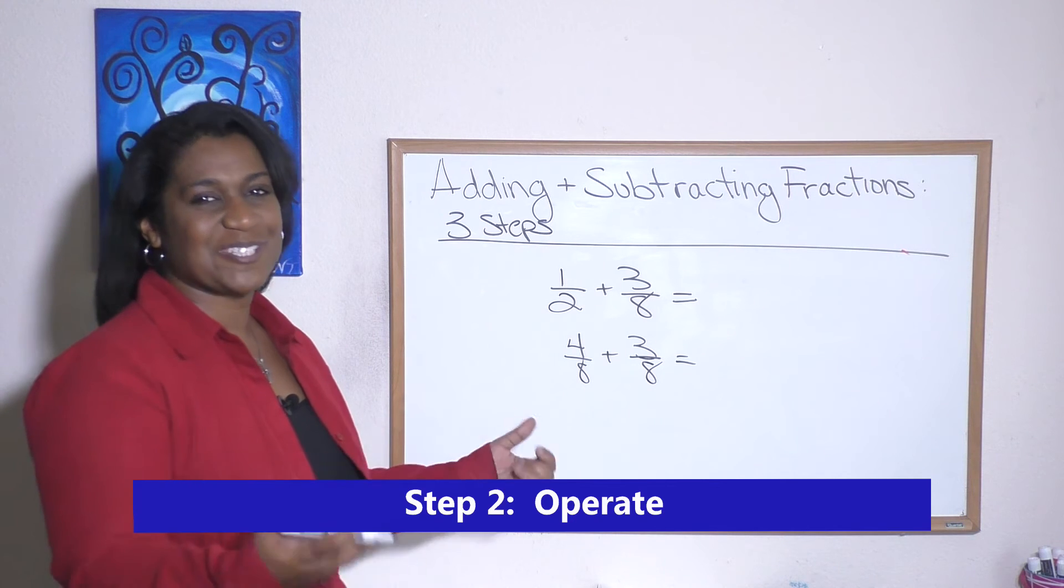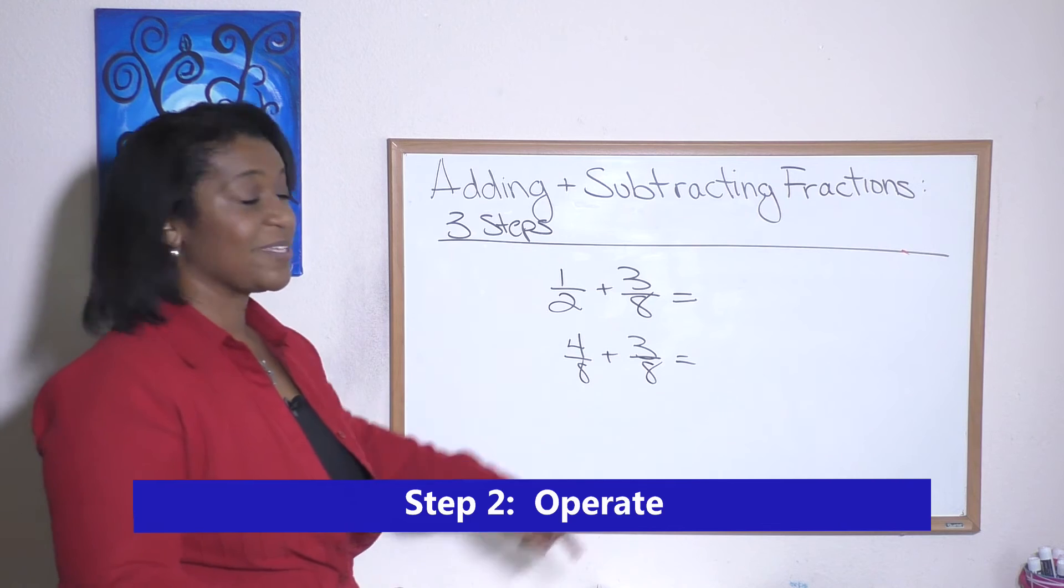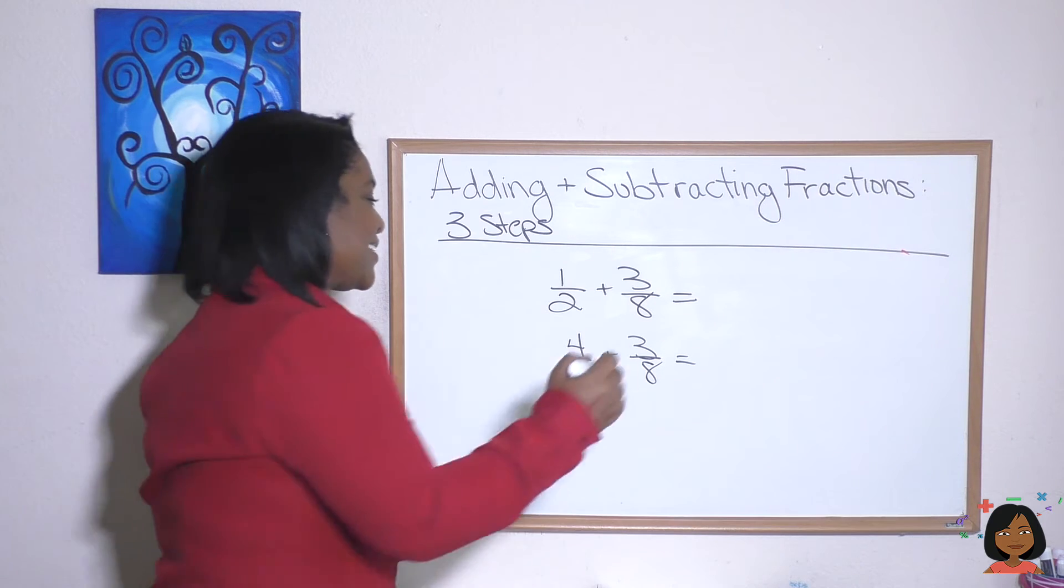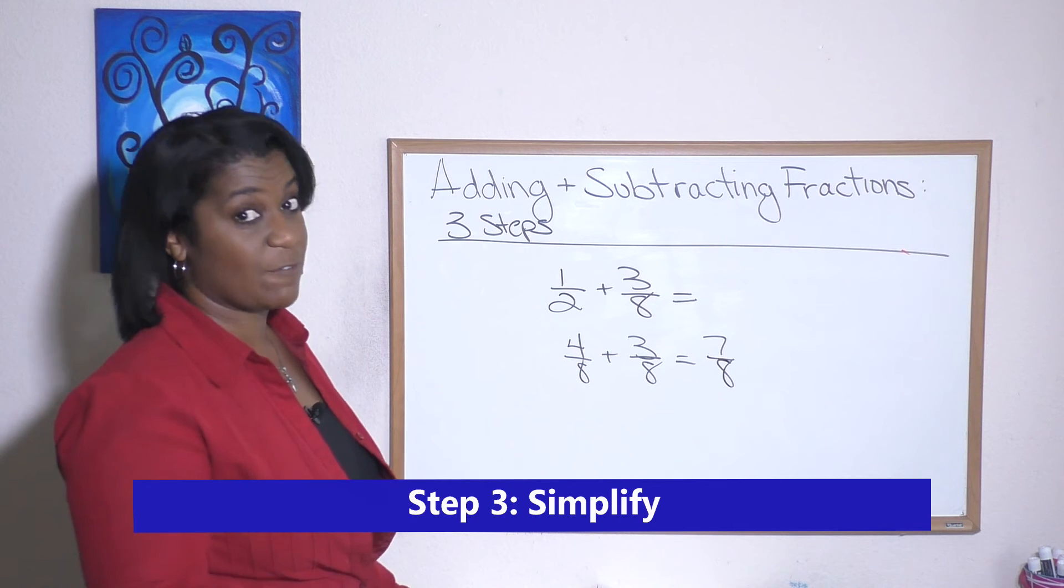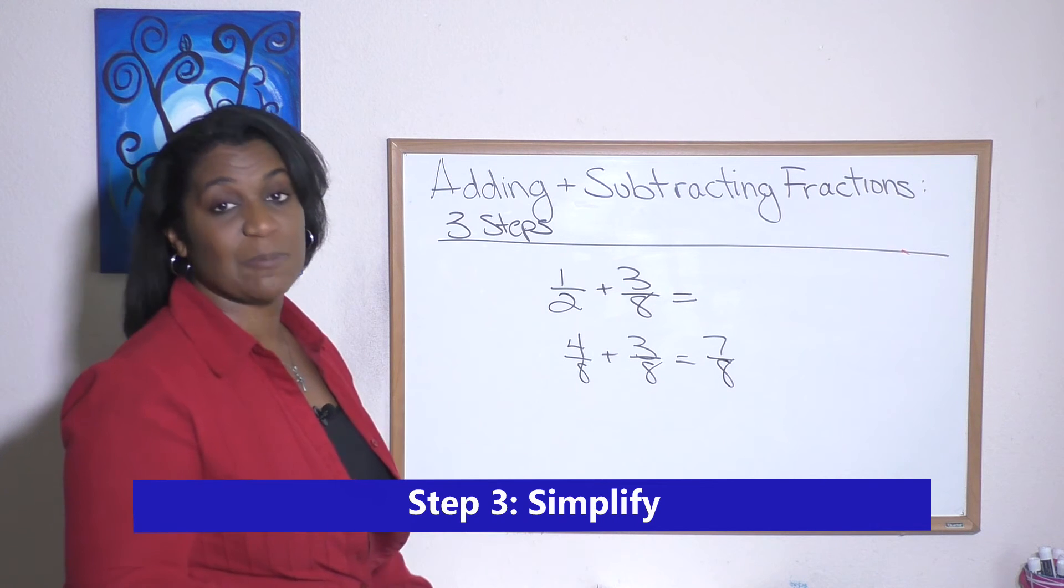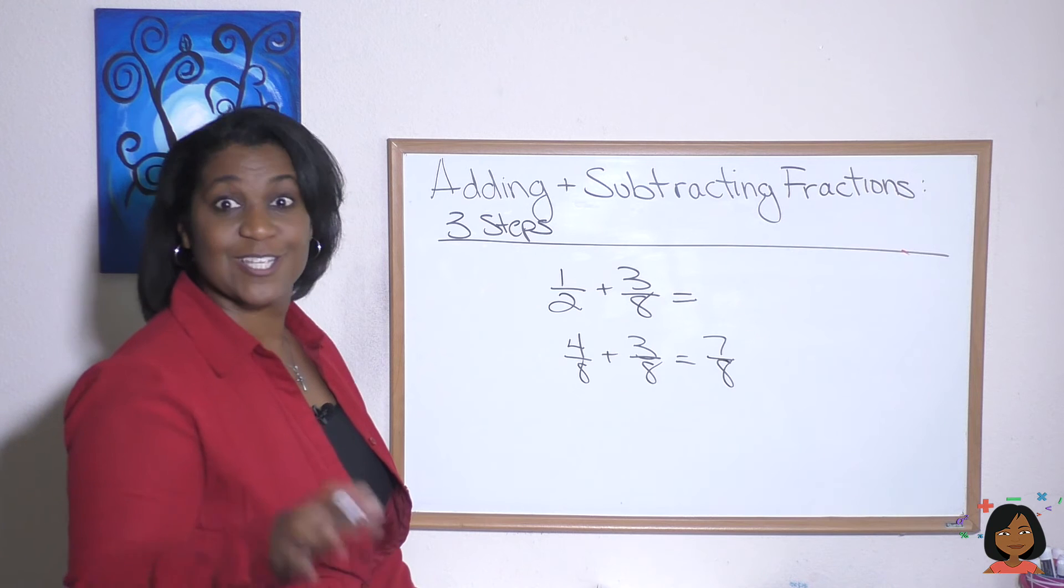Now we're going to operate, which is our addition. Four eighths plus three eighths equals seven eighths. And then the third step is we simplify, or we look to see if we can simplify. Can we simplify seven eighths? We cannot, so we're done.